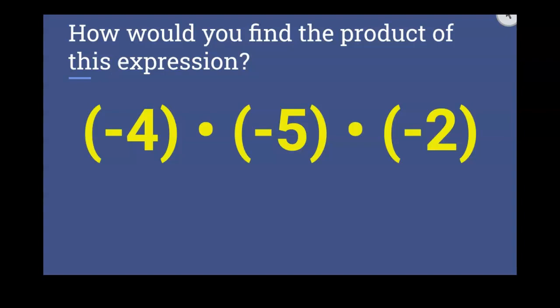All right, a little bit of a challenge. How would you find the product of this expression if there's three terms? All right, you're allowed to multiply in any order that you want. But if we have negative 4 times negative 5 times negative 2, if you choose to go left to right, you would do negative 4 times negative 5.